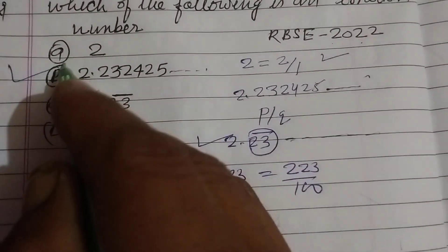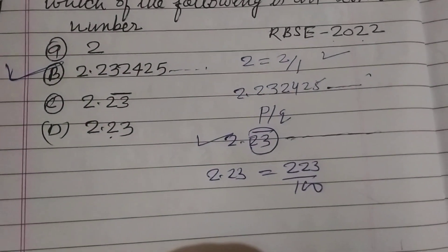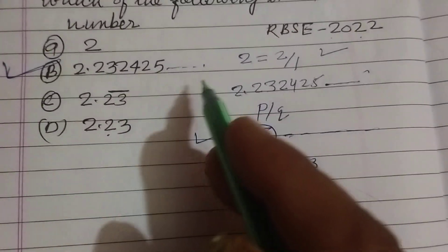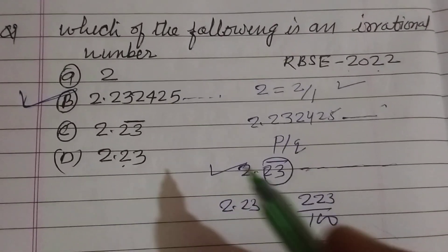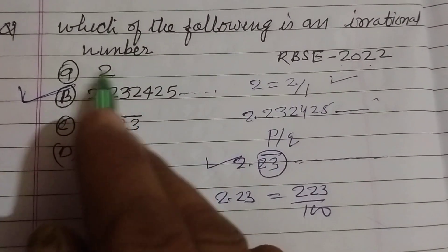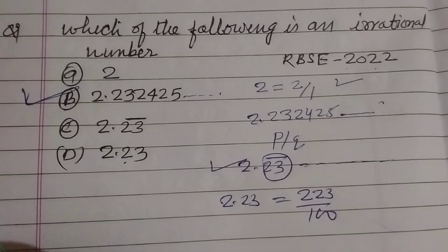Therefore the result is that B, 2.232425 and so on, is an irrational number. Okay. Others are rational numbers. So I hope you got it.